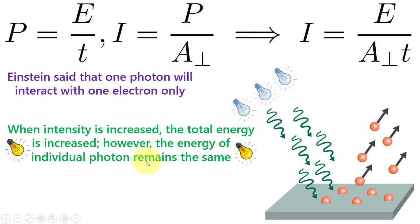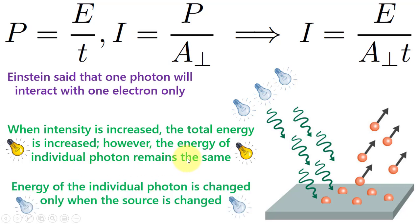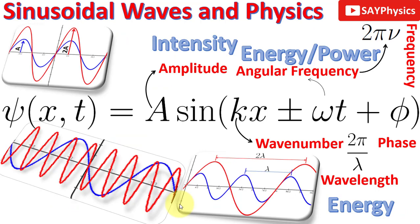The energy of the individual photon remains the same, and when we change the source to one where individual photons emitted have more energy, the energy of the individual photon is changed only when the source is changed to a high energy source.